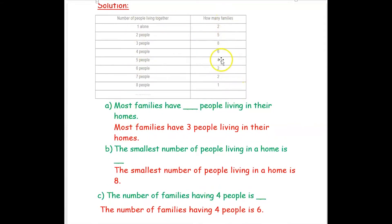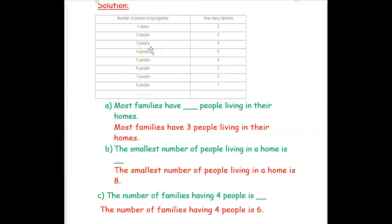Now we will move to the solution. I have asked all my friends and filled this table, which we call a smart chart. Only one person living together: two families. Five of my friends said there are two people living in their house. Similarly, eight of my friends told there are three people living in their house.